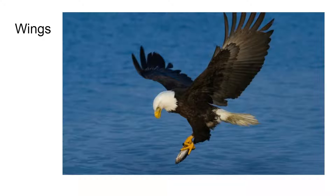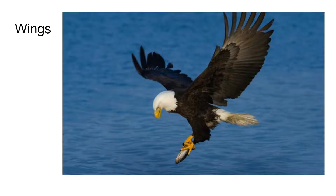Birds have modified forelimbs, and those forelimbs are wings. Their wings are unlike any other forelimb in vertebrates in that they are completely modified for the purpose of flight. There aren't any digits or hands; the forearm is all fused together to make this flight structure. Some birds, like this eagle, have a very large, sturdy forearm for flight.